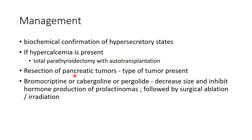Resection of pancreatic tumors depends on the type of tumor present. For pituitary prolactinomas, bromocriptine, cabergoline, or pergolide should be given to decrease the size and inhibit hormone production of prolactinomas. This should be followed by surgical ablation, irradiation, or both.